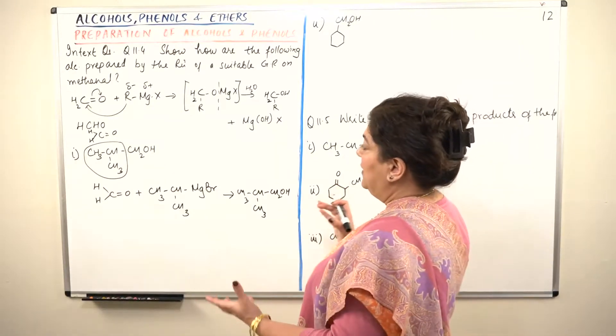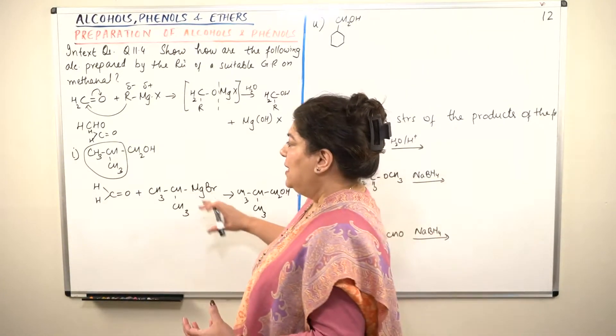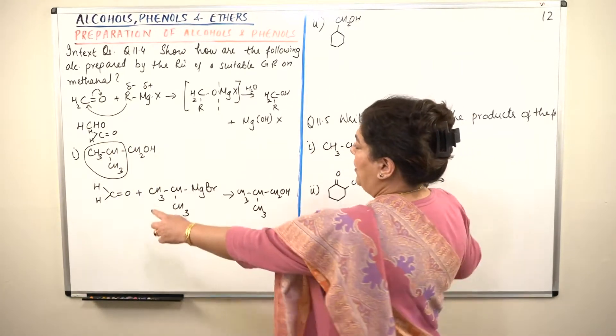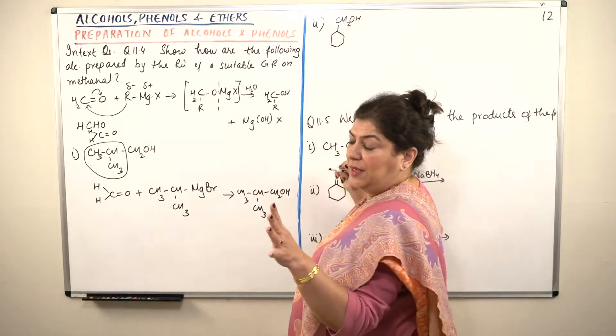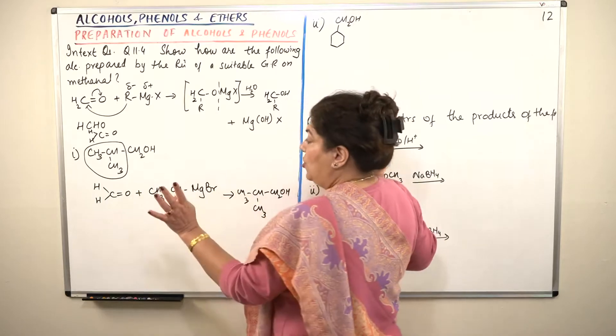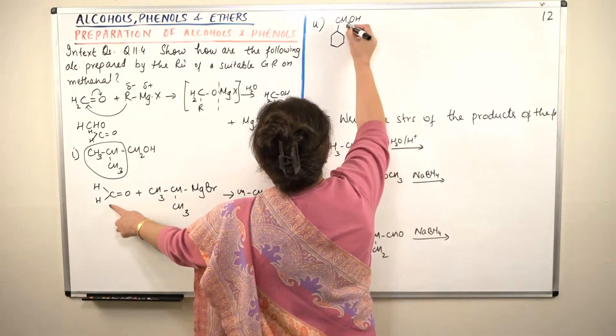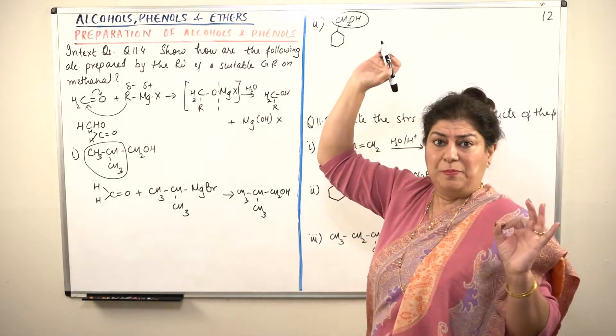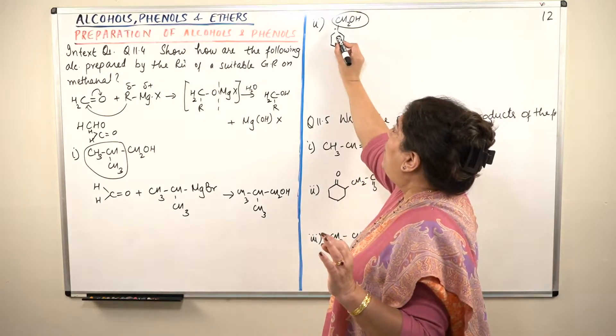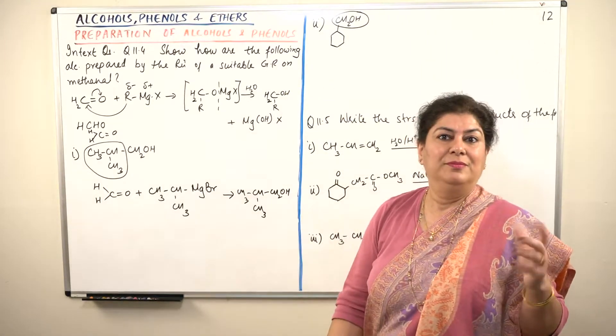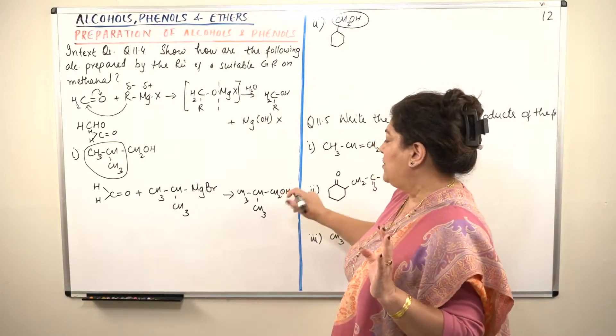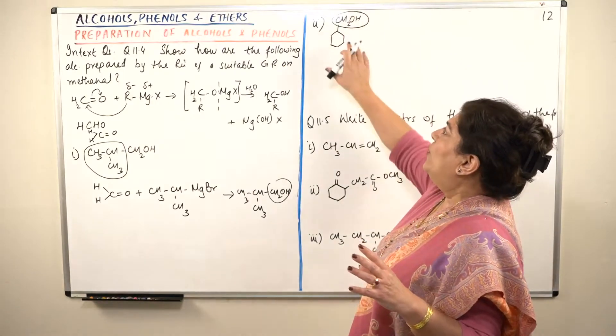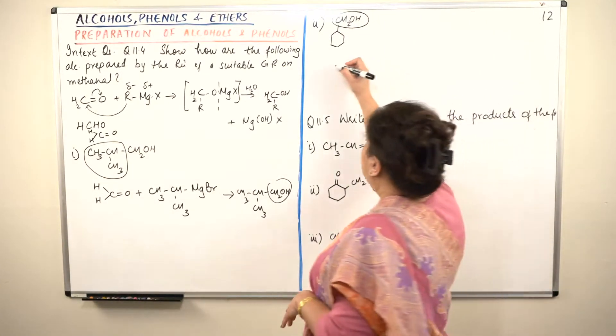So you could do another thing. Instead of writing it like this, you could write the product or since we already have the product here, we do know how we have to go about. In this question also, the same thing. You have CH2 double bond O. So CH2OH is the part which has been obtained from methanal. This is the part which has been obtained from methanal. So R obviously is this. CH2OH is the part that was obtained from methanal and the remaining part was R. So here also CH2OH is from methanal. The remaining part is R. So let us start with methanal.